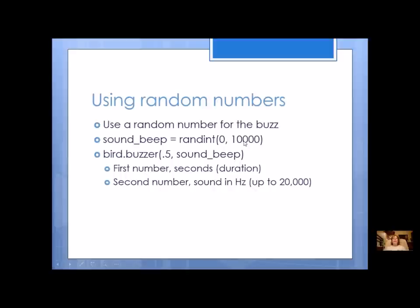I could also use it for buzz. So I haven't given you an example of buzz before, but you can read the documentation. Buzzer is the method and it's got two arguments. The first one is the duration, how many seconds. And the second one is the actual sound beep in hertz. So it goes up to 20,000. My example is just up to 10,000, but you kind of get the idea. I could also use a random number for the duration.